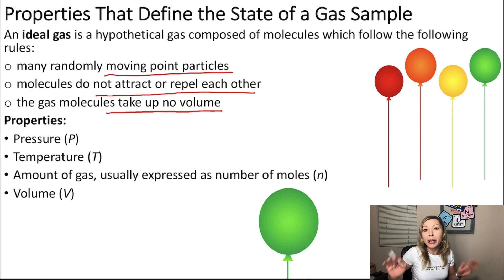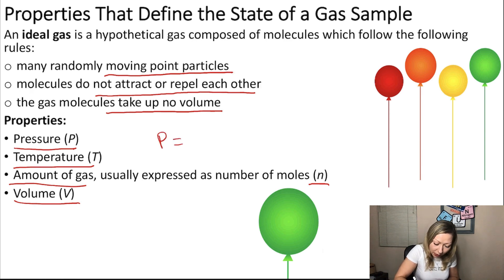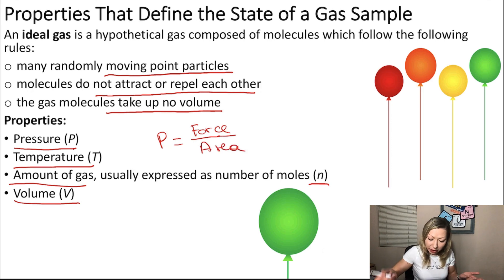Now, if we are talking about gases, we have to take into account four properties. These are pressure, temperature, the amount of gas, which is usually given in a number of moles. This is given with lowercase n, and the volume. So, let's start first with pressure. What is pressure? Pressure equals force over area. Now, let's take this balloon, this green one, big one right here.